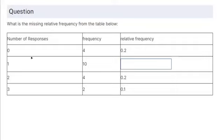So if this table is complete, meaning they have the total number of possible options, and 3 is the maximum number of responses and 0 is the minimum, then that means all the relative frequencies should add up to 1.